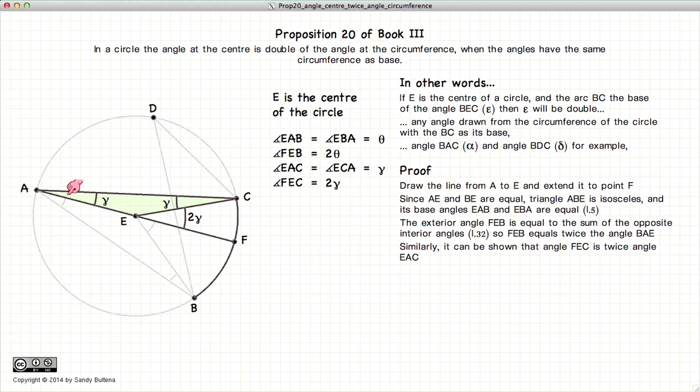Similarly, if we look at this triangle, it again is an isosceles triangle, and we'll label these angles gamma. And again, the exterior angle is the sum of the opposite angles. So FEC will equal 2 gamma.